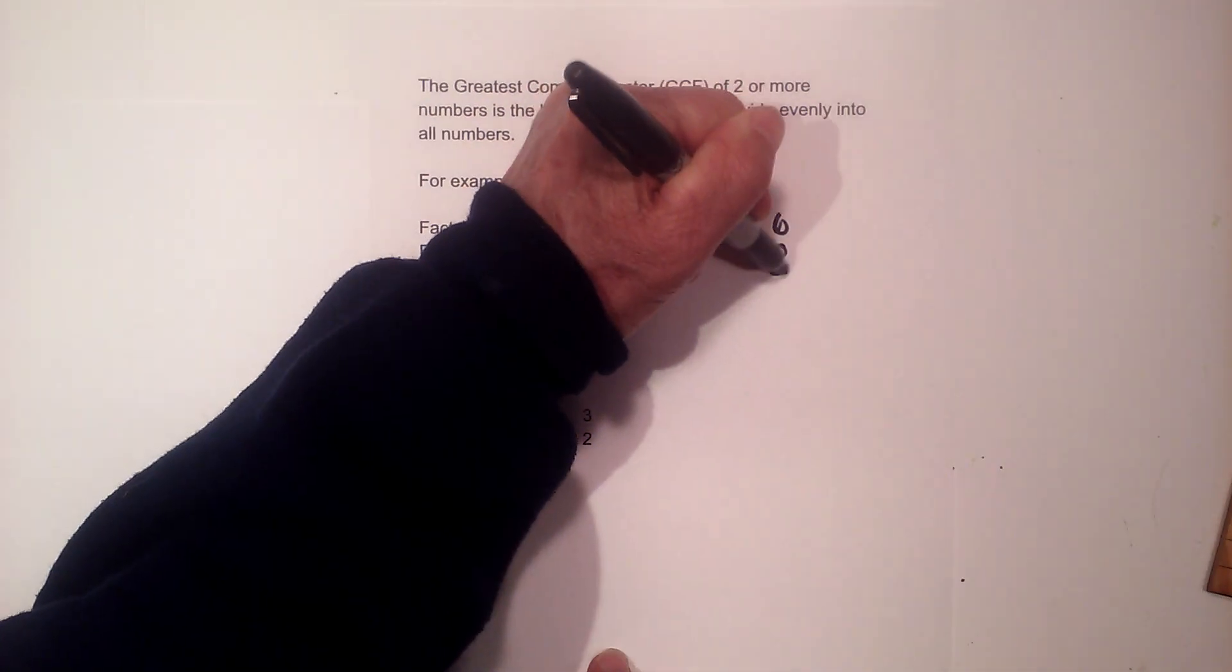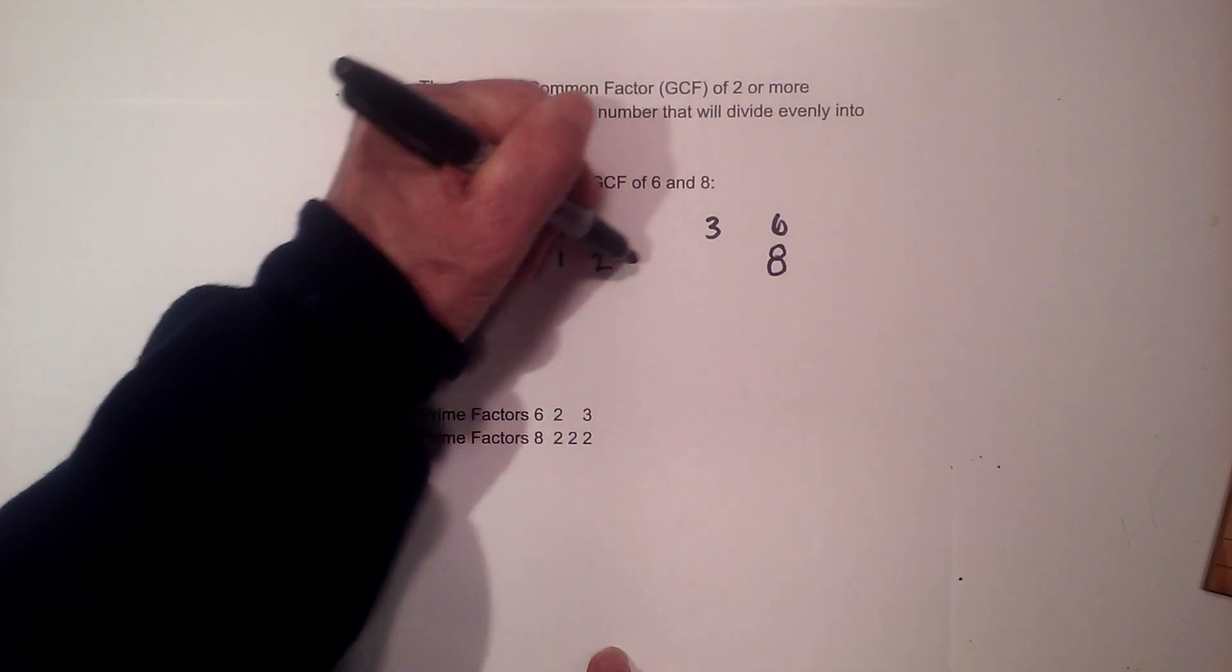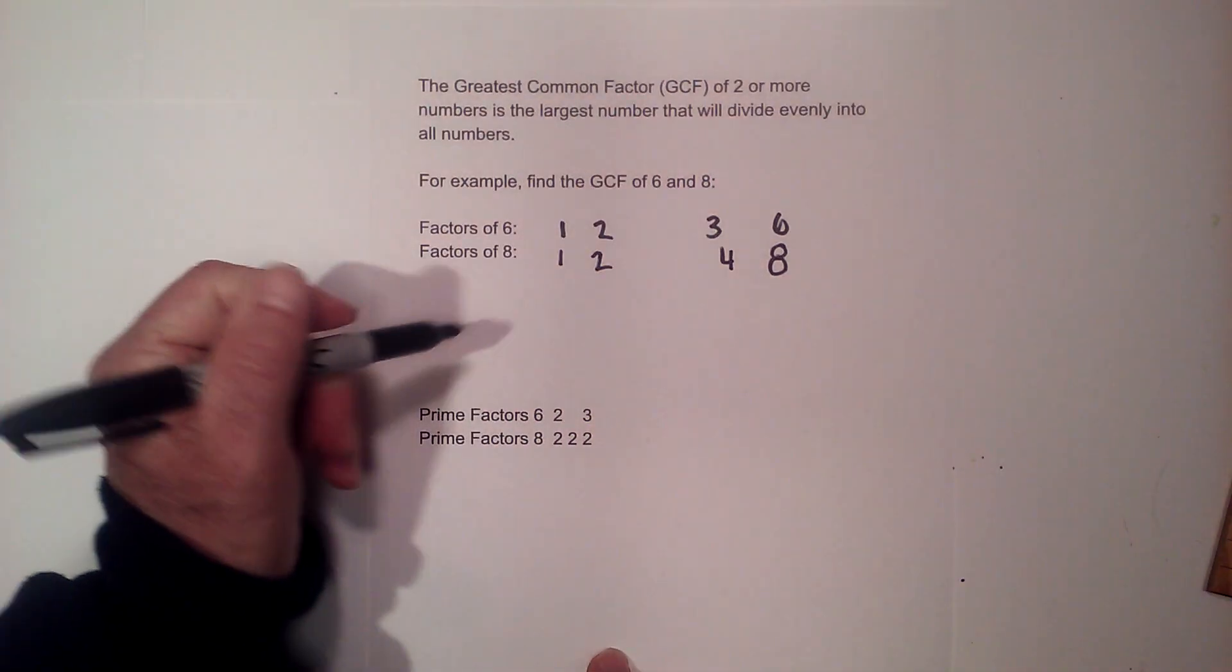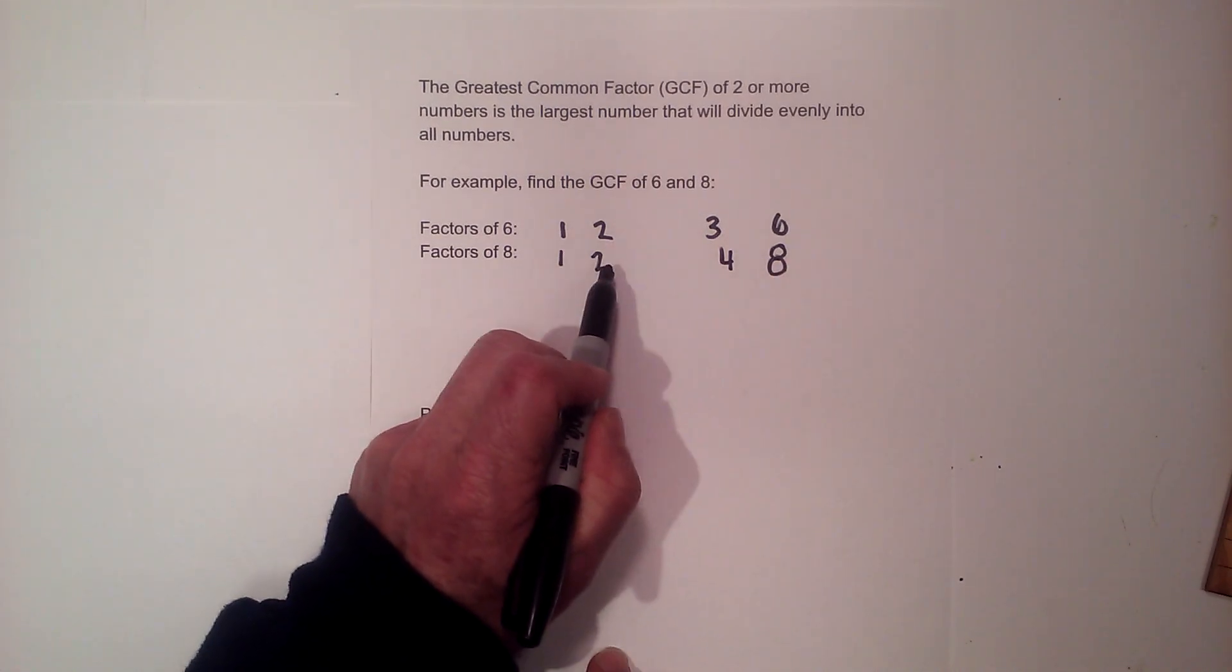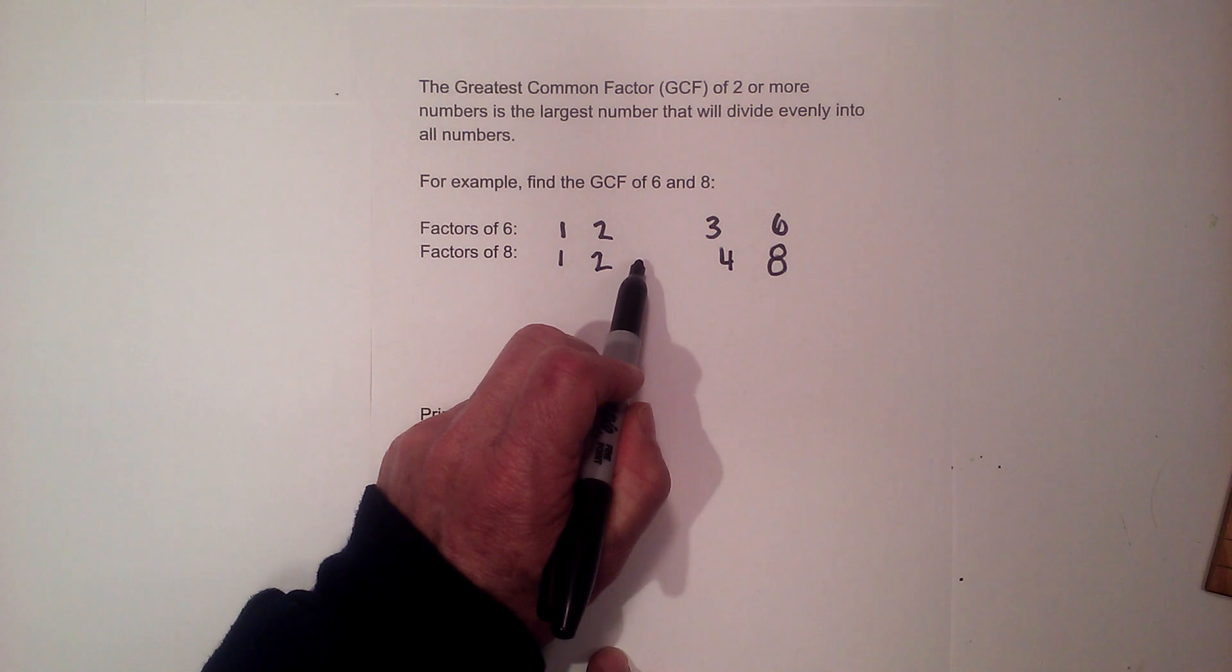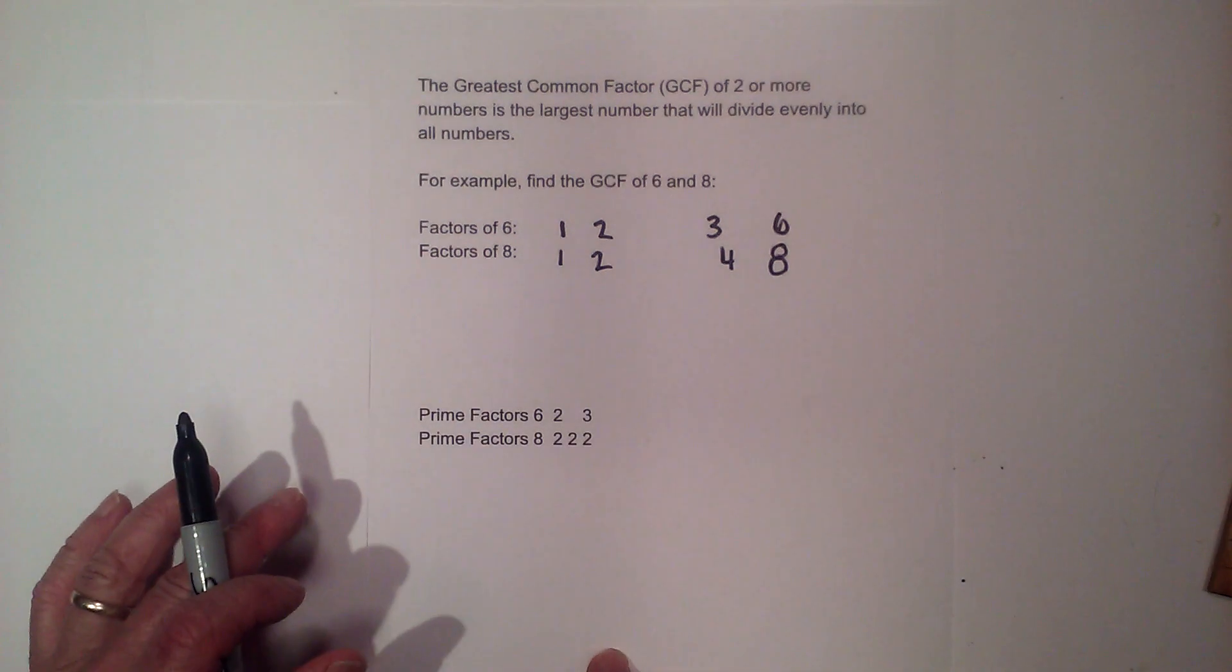I'm going to repeat for 8. Will 2 go into 8? Yes, 2 goes into 8 four times. Now will 3 go into 8? No. And so I've used all the numbers in between 2 and 4 so I know that's all the factors.